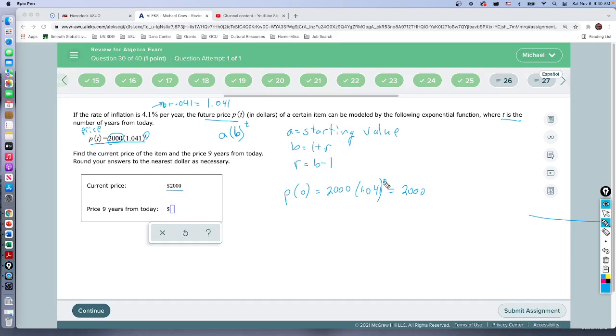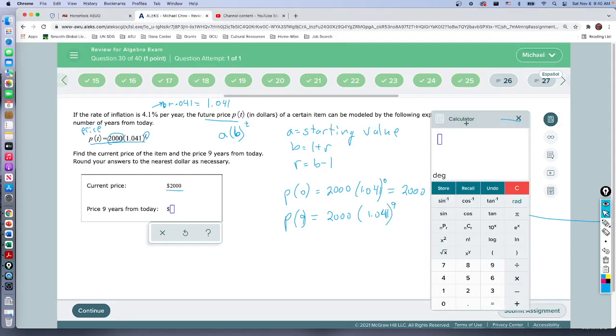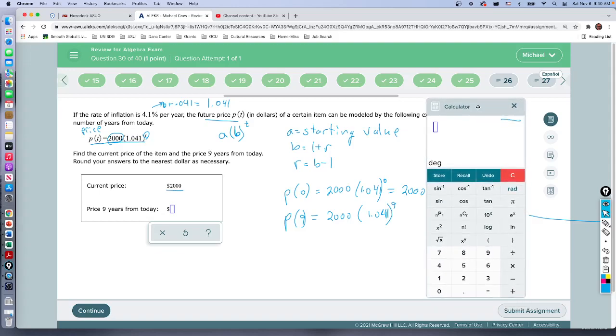Price nine years from today? Well that's P(9) because T is how many years. So that's 2000 times 1.041 raised to the nine power. And for that we can use the graphing calculator. Well we don't need a graphing calculator and they don't give it to us so that's good. We just can use our regular calculator: 2000 times, or you could just put the parentheses, 1.041 parentheses raised to the nine power and we just hit enter.